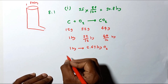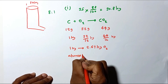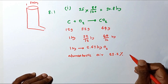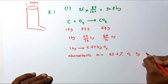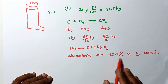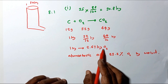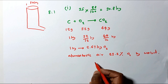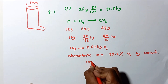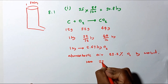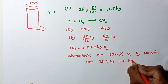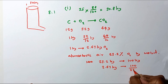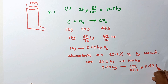Atmospheric air contains 23.2 percent oxygen by weight. To obtain 2.67 kilograms of oxygen, the amount of air needed can be calculated as: if 100 kilograms of atmospheric air contains 23.2 kilograms of oxygen, then to get 2.67 kilograms of oxygen, approximately 11.5 kilograms of atmospheric air is needed.